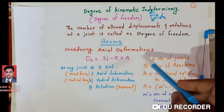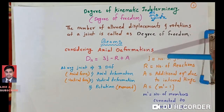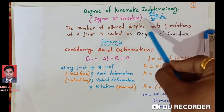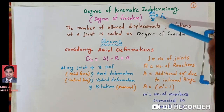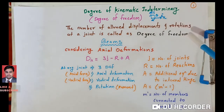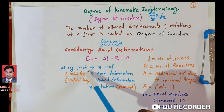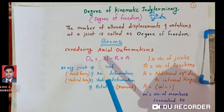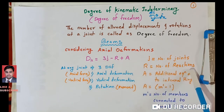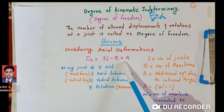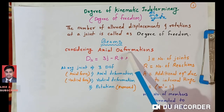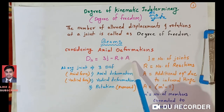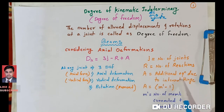Now, degrees of freedom for beams — by considering axial deformations — means we consider deformations along the axis of the beam. The formula for beams is: degree of kinematic indeterminacy DK = 3J − R + A, where J is the number of joints, R is the number of reactions, and A is the additional equation due to internal hinges.